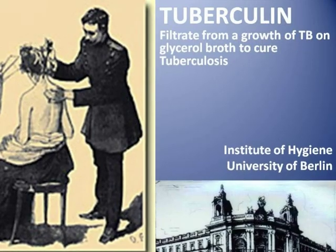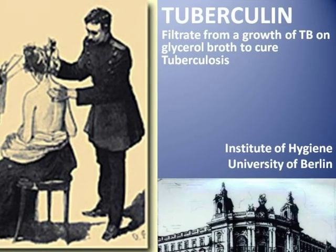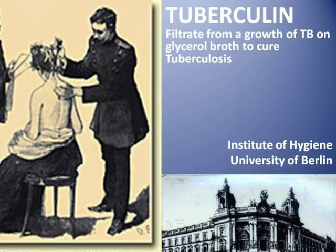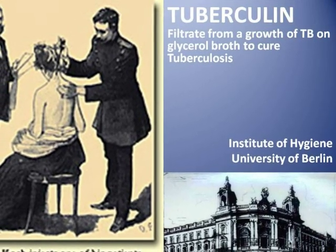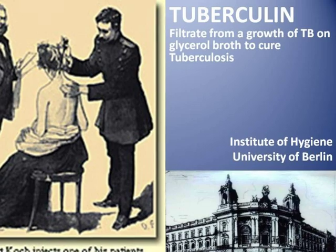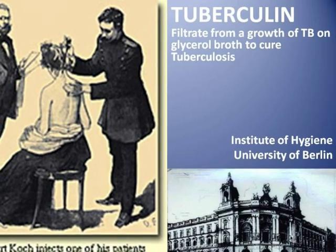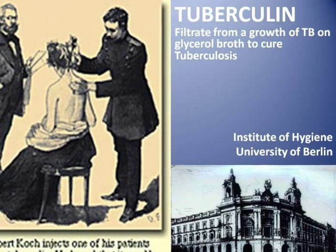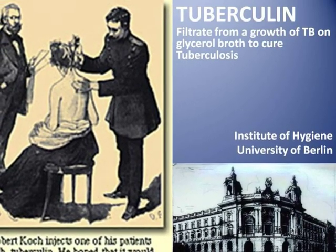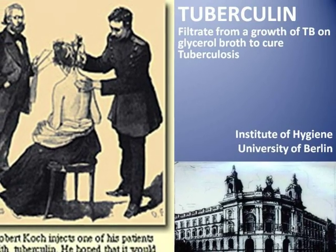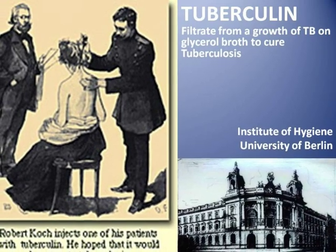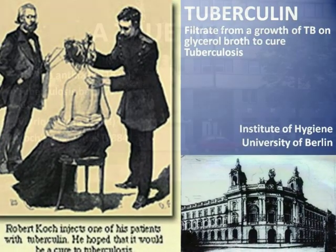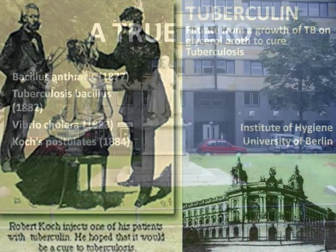In 1885, Koch was appointed professor and director of the Institute of Hygiene at the University of Berlin, where he unsuccessfully used a protein derivative of the tuberculosis bacillus that he called tuberculine as a cure for TB.